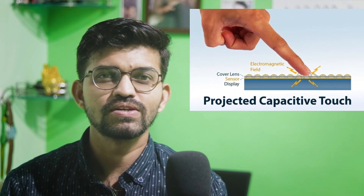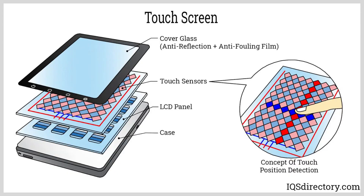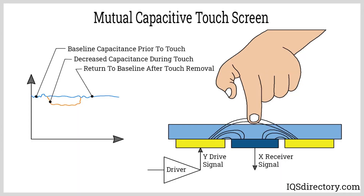Moving ahead, next is capacitive touchscreens. Looking at the construction: the glass panel is on top, and below that glass there is a layer of electron patterns — those electron layer patterns run vertically (Y) and horizontally (X), just like a graph. Initially, before a user touches the display, it is completely electrically charged — it works as a capacitor, meaning a charge is present on those electron layers.